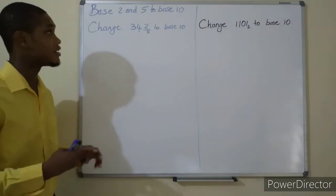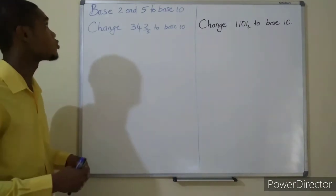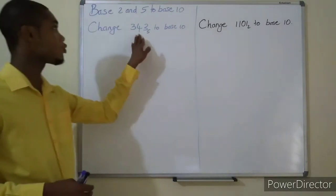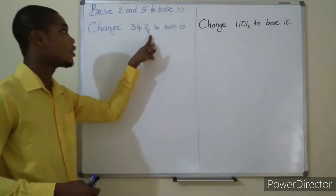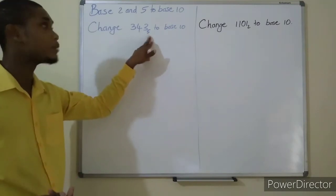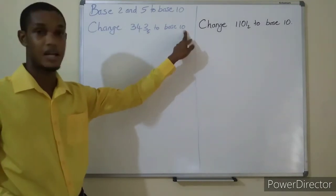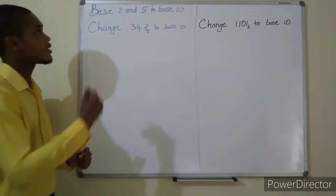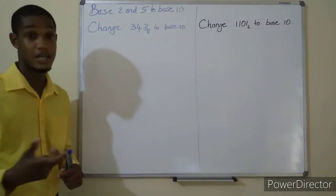This is change 343 base 5 to base 10. You can have base 5 or the base written like this, or you can put it out in words to say something like this. Now this is 343 base 5 to base 10.